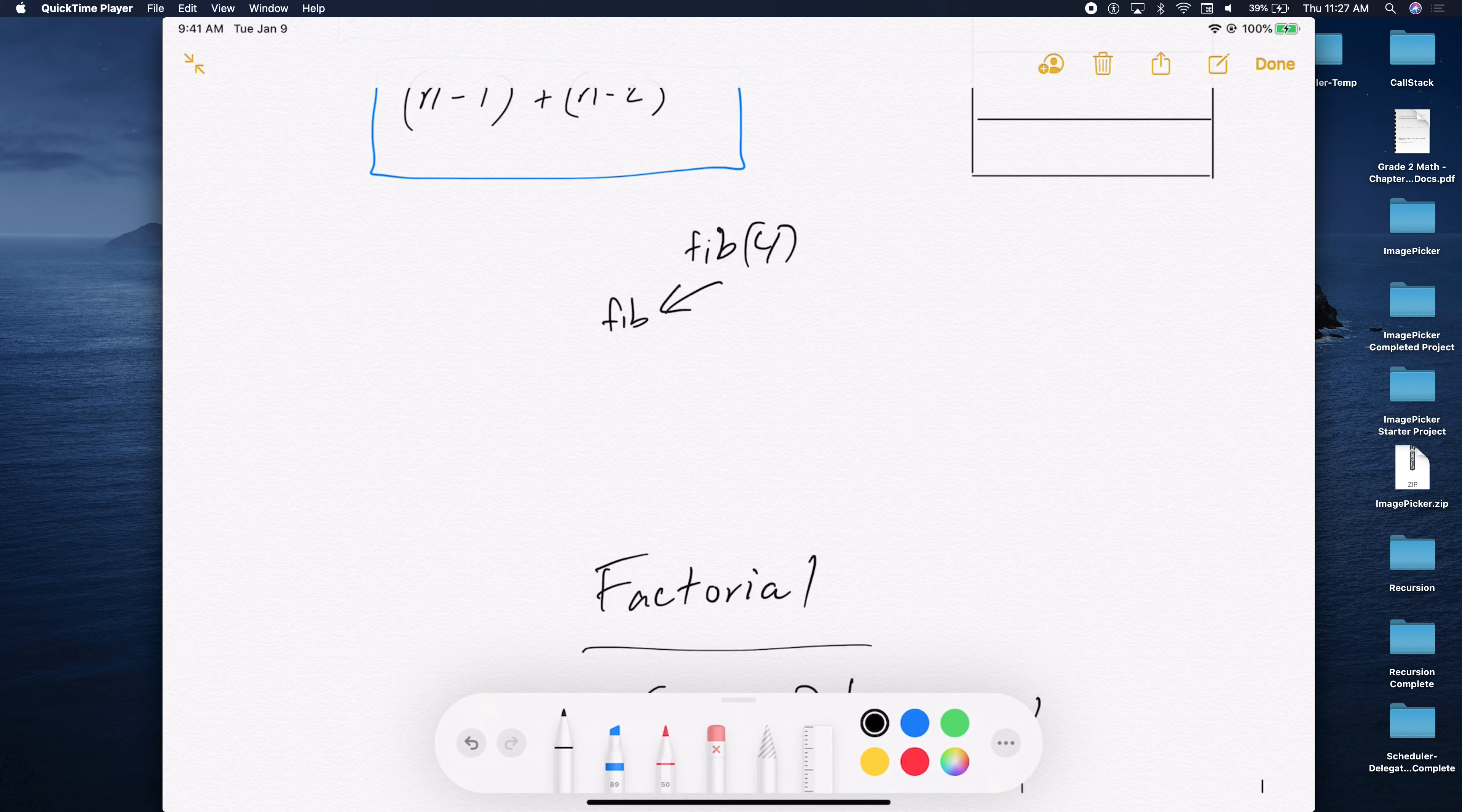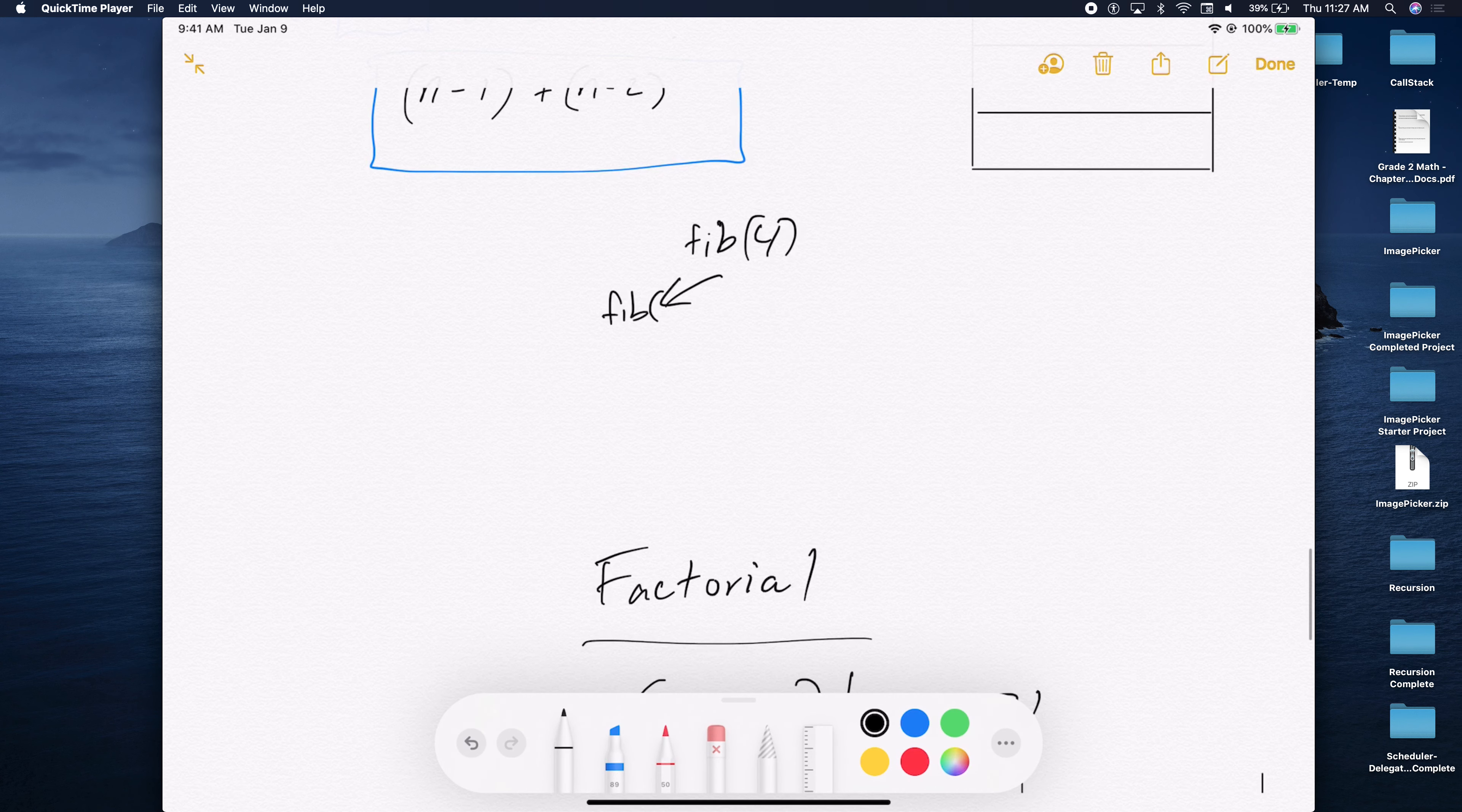Before, 4 minus 2, well, 4 minus 1 first, would be Fibonacci of 3. And what's the other one? It would be 2, in your case, Fibonacci of 2 here, because n minus 2.